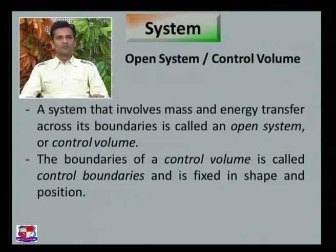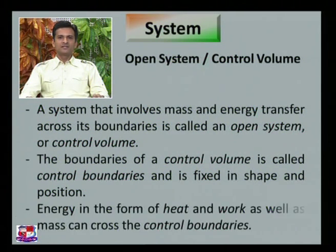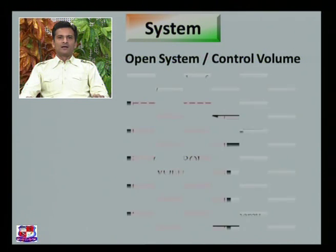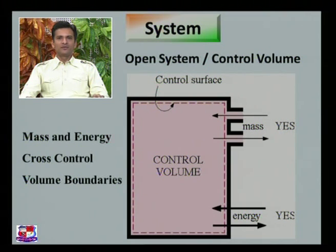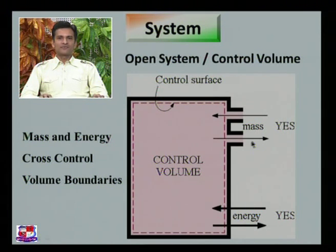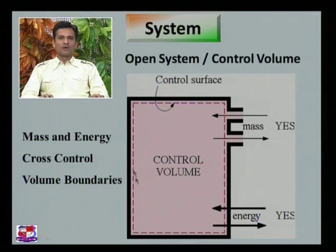The boundary of a control volume is called the control surface and is fixed in shape and position. Energy in the form of heat and work, as well as mass, can cross the control boundaries in an open system. In this example, the control surface is shown by these lines enclosing the control volume — mass can come inside or go outside, and energy can also cross the boundary in both directions.